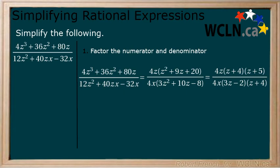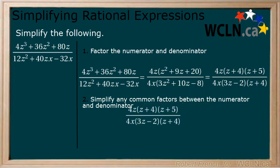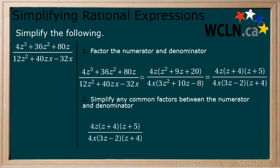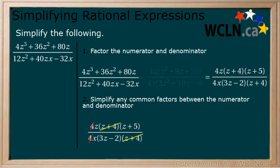Now that our numerator and denominator are fully factored, we can move on to Step 2: Simplify any common factors between the numerator and the denominator. We have a couple of common factors — the 4s and the z plus 4 factors cancel, leaving us with our final simplified answer.